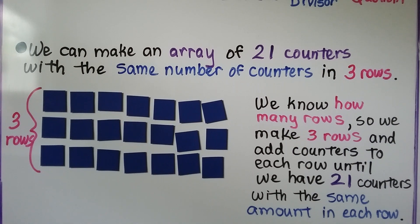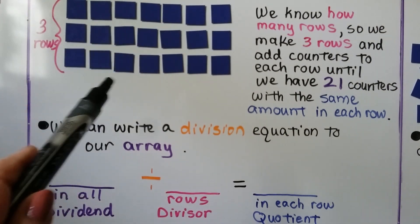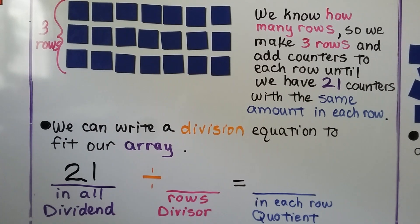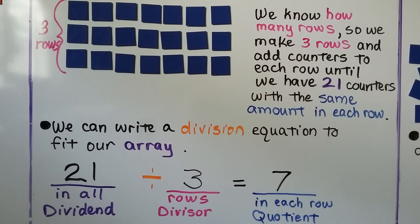21 divided by 3 is equal to 7. We write a division equation to fit our array. We know we have 21 in all, 3 rows, and 7 in each row. 21 is our dividend, 3 is our divisor, and 7 is our quotient — our answer.